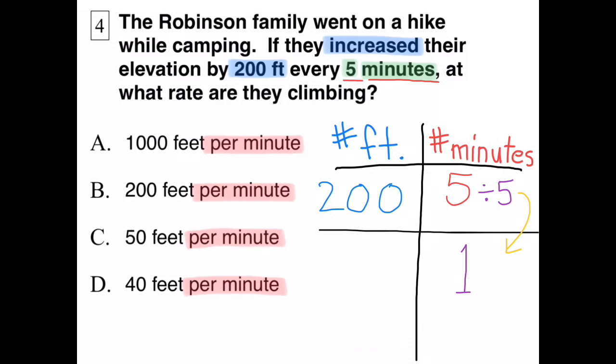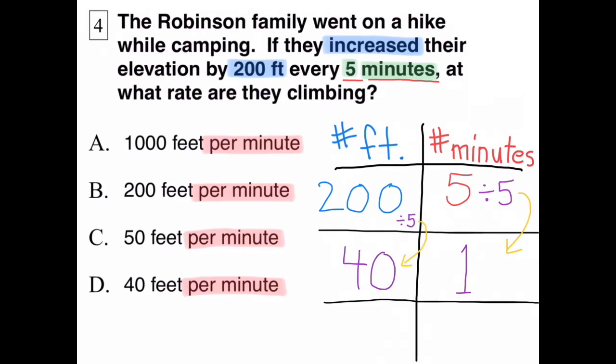Five minutes divided by five equals one minute, or one. And since we made the right hand column five times smaller by dividing it by five, we also need to make the left hand column five times smaller by dividing that by five. 200 divided by five equals 40.